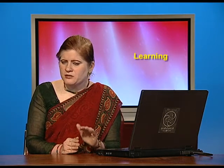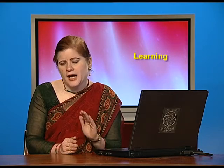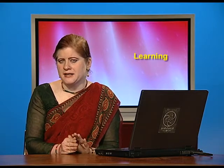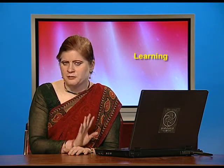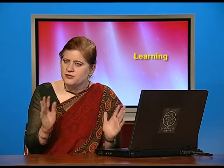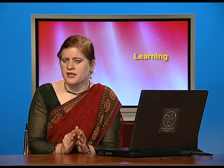If the lever was pressed, the food pellets would come down and fall into a plate. The rat could then eat them from that plate. So, a funnel, a lever, a food plate, and a box in which the rat is placed — these were the basic ingredients of a Skinner box.